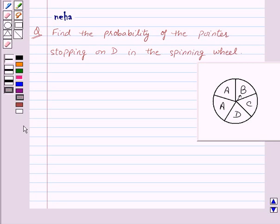Hi and welcome to the session. Today we will discuss the following question. The question says find the probability of the pointer stopping on D in the spinning wheel.